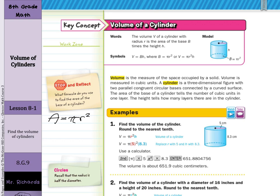In our example, find the volume of a cylinder rounded to the nearest tenth. We'll start with our volume formula: volume equals pi times radius squared times height. Volume equals pi times 5 squared times 8.3. We take 5 squared, which is 25, times 8.3. Whether you use the pi button or approximate pi as 3.14, times 25 times 8.3, you get about 651.9 cubic centimeters. Make sure you square your radius first before multiplying by pi or height.